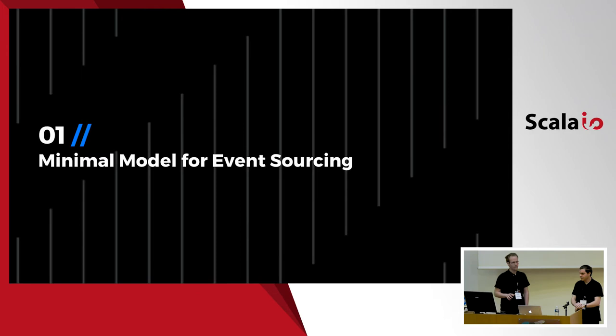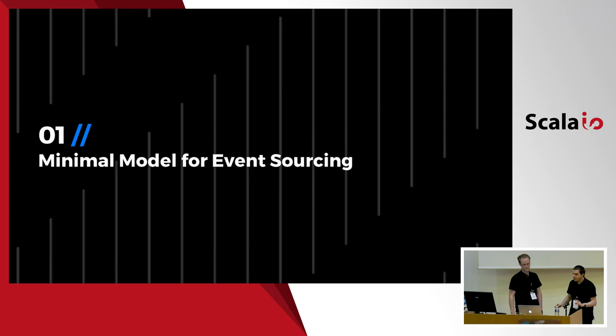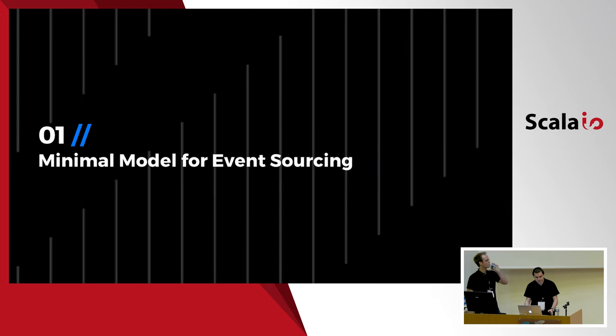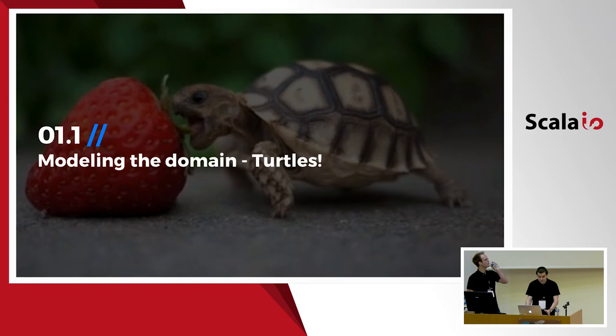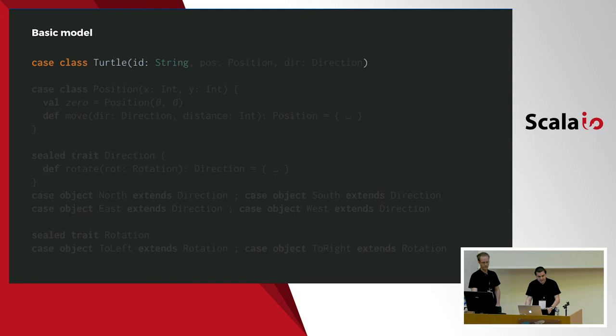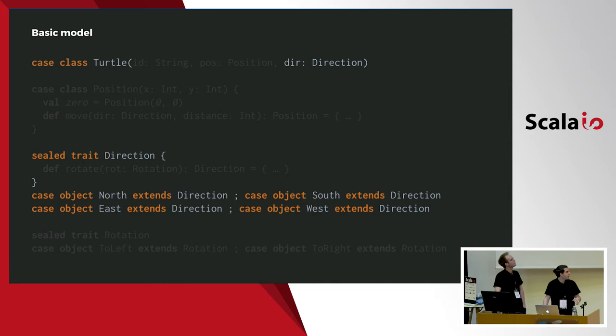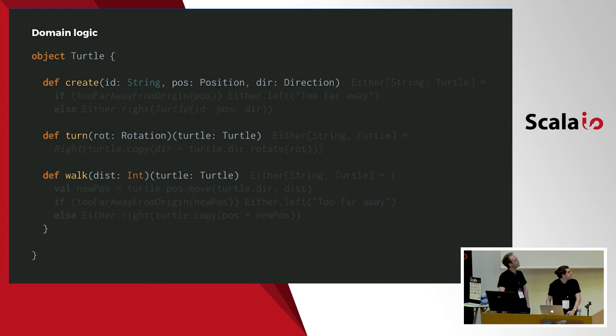Before we go any further, let's define some basic building blocks for event sourcing. We'll start with a domain many of you may already know from when you start learning to program: the turtle. We'll define some turtles which have an ID and a position, which can be moved, and an absolute direction, which can be rotated. A turtle can be created, it can be turned, and it can walk straight on.